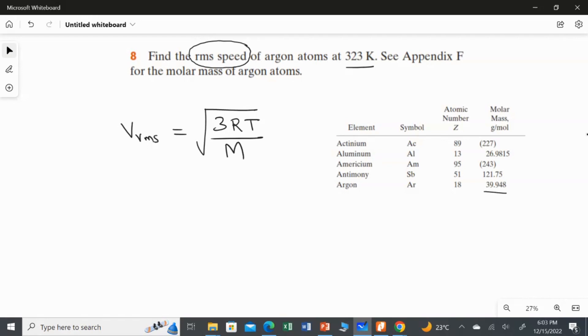Now here R is the gas constant and T is already given as 323 Kelvin, so you don't need to convert it again because the value is already given in Kelvin. But the molar mass of this argon atom is given here as 39.948 gram per mole.